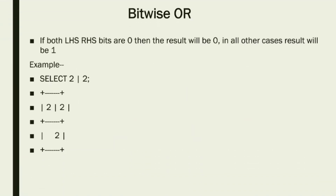Now let's talk about the bitwise OR operator. For the OR operator: if both the left-hand side and right-hand side bits are 0, then the result will be 0; in all other cases the result will be 1. Example: SELECT 2 OR 2 — the output is 2.